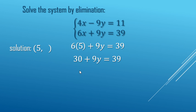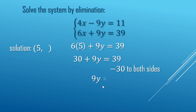Go ahead and multiply. 30 plus 9y equals 39. We need to un-add the 30 to the variable, so subtract 30 from both sides. We get 9y equals 9, since 39 minus 30 is 9.